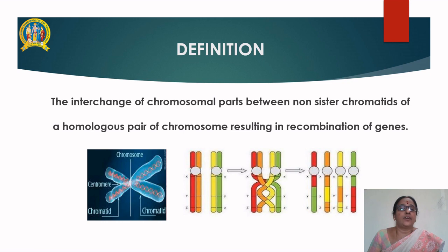Crossing over is nothing but the interchange of chromosomal parts between non-sister chromatids of a homologous pair of chromosomes, resulting in recombination of genes.